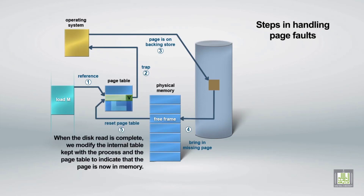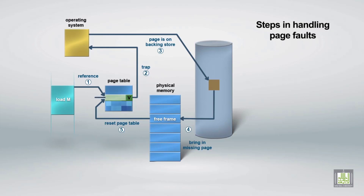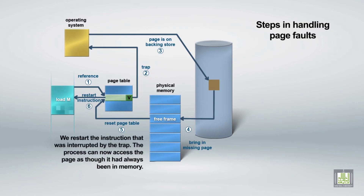When the disk read is complete, we modify the internal table kept with the process and the page table to indicate that the page is now in memory. We then restart the instruction that was interrupted by the trap.